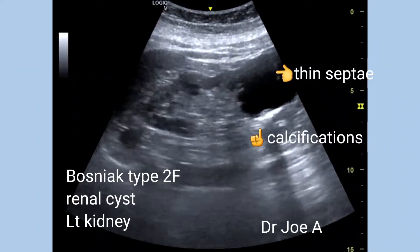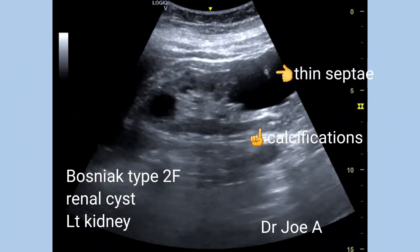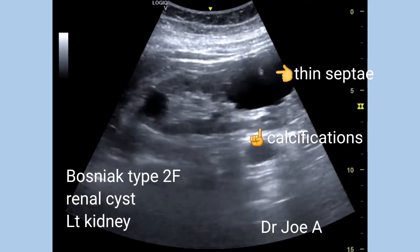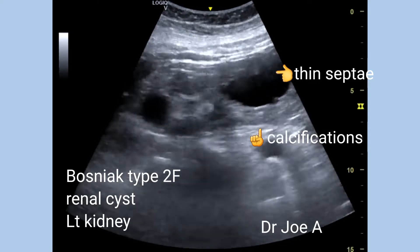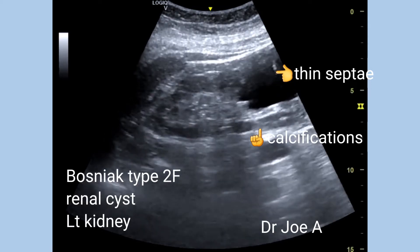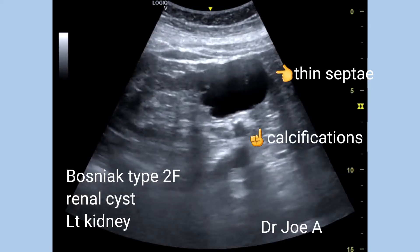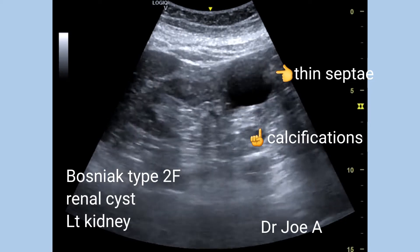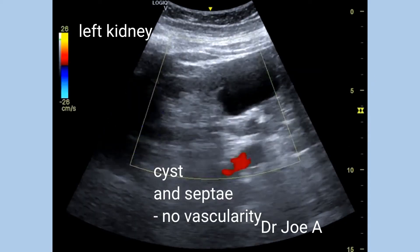This patient has bilateral renal cortical cysts. The left renal cortical cyst shows thin septae and wall calcification. Thus, this is a Bosniak type 2F renal cyst.